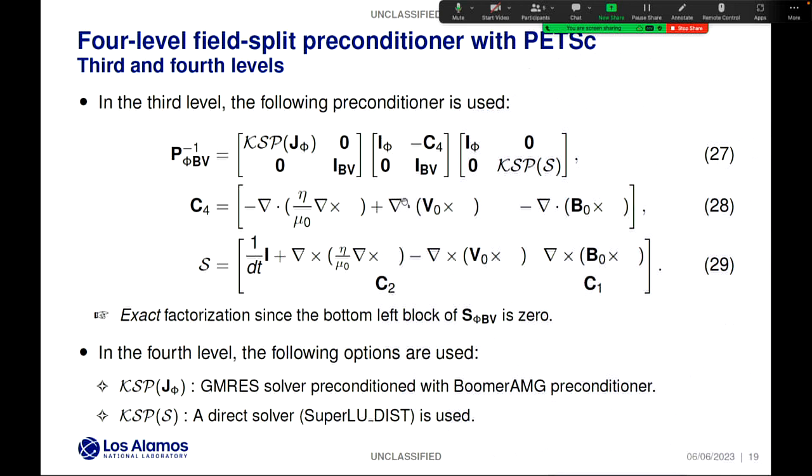For the two remaining blocks of the fourth level, which are J phi and this S that contains only the magnetic field and the ion flow, we use GMRES preconditioned with BoomerAMG preconditioner from the HYPRE package for J phi because it's just equal to a Laplacian, and we know BoomerAMG works very well for this kind of problem. For the other block, we use a direct solver, which is SuperLU_dist, for this Schur complement that contains only the B and the VI node.